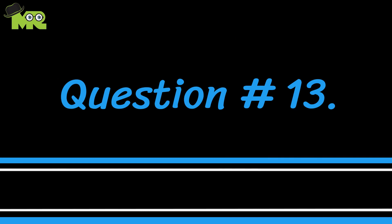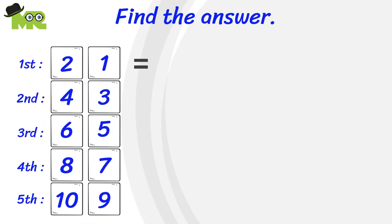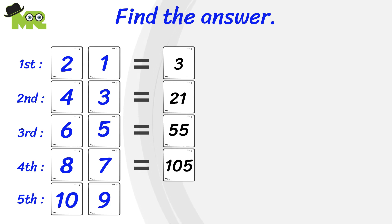Let's go to question 13. Can you find the answer for the fifth equation? If 2 and 1 are equal to 3, and 4 and 3 are equal to 21, 6 and 5 are equal to 55, and 8 and 7 are equal to 105, what will be your answer if we have 10 and 9 in the fifth equation, and how?